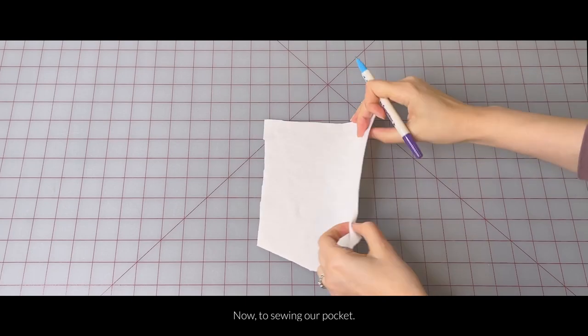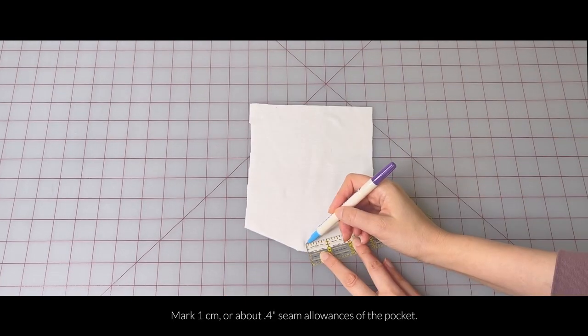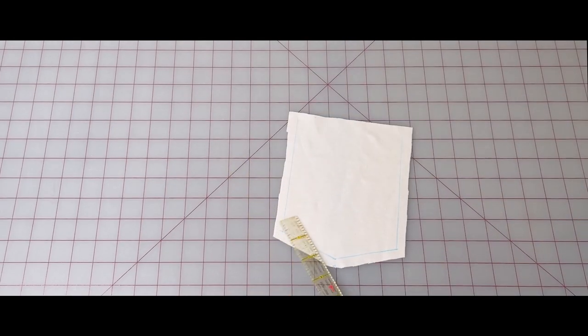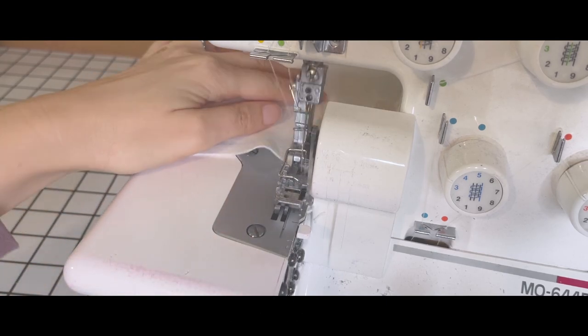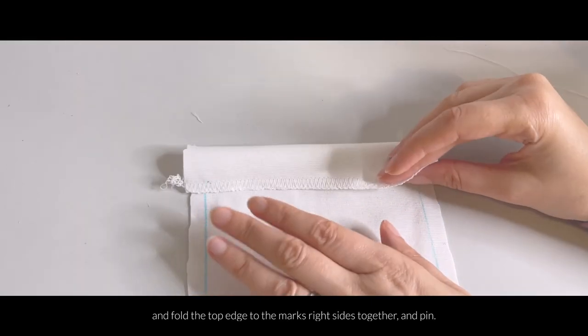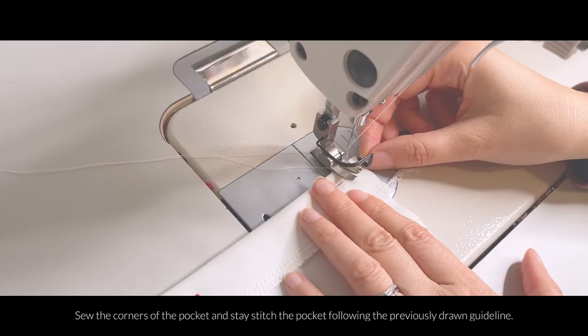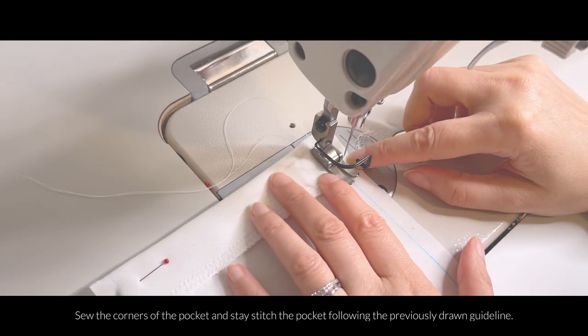Now, to sewing our pocket. Mark 1cm, or about 0.4 inches, seam allowances of the pocket. Stitch this top edge of the pocket, and then fold this edge to the marks, right sides together, and pin. Sew the corners of the pocket, and then stay stitch the pocket following the previously drawn guideline.